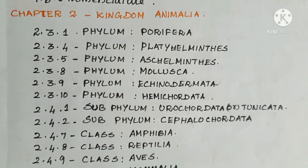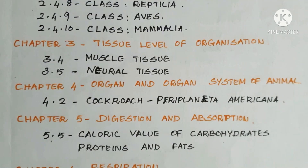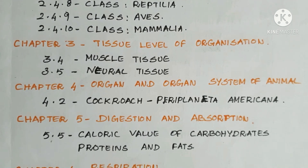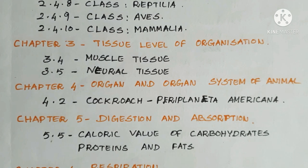2.4.8 Class Reptilia, 2.4.9 Class Aves, and 2.4.10 Class Mammalia. Chapter 3: Tissue Level of Organization — 3.4 Muscle Tissue, 3.5 Neural Tissue. Chapter 4: Organ and Organ System of Animal — 4.2 Cockroach Periplaneta americana. Chapter 5: Digestion and Absorption — 5.5 Caloric Value of Carbohydrates, Proteins and Fats.